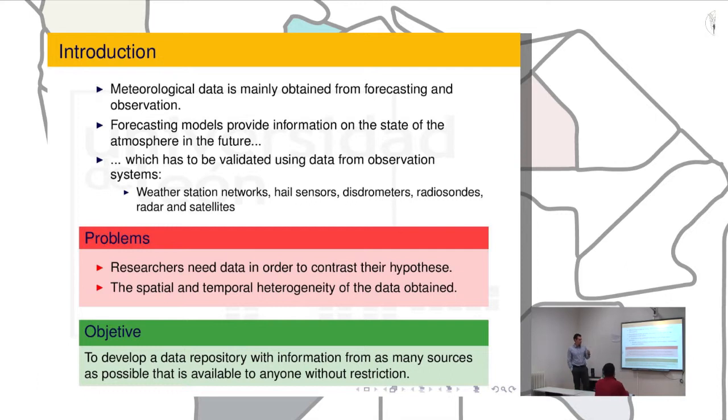And there is another problem which has to do with the format of the information. There is a lot of formats in the information. For example, forecasting models gives the data results in a format called NETCDF. A weather station produces their outputs in a text-plain format. So, if you have to work with several sources, you need to mix that information and that usually is not an easy task. Especially if you don't have an IT engineer in the group.